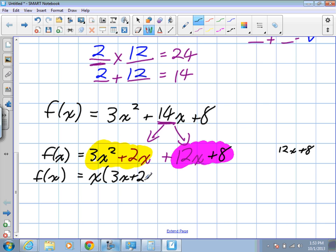And I need a common factor of 12x and 8. 4. So we factor out 4, what would be left? 3x plus 2. Sorry, I wrote an extra x there.